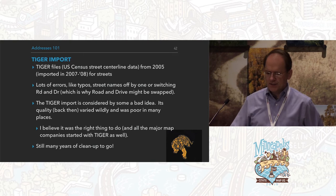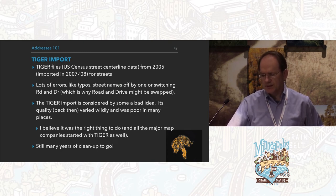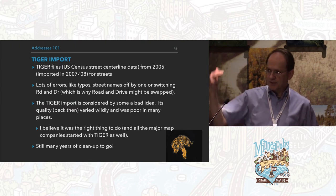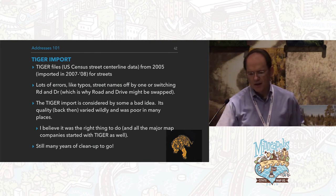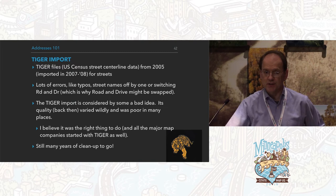Brief segue into Tiger. Tiger was a wonderful thing and people hate it — both are true. There are lots of errors: street names off by a street, missed segments. The Tiger import was considered a very bad idea, but I think it was the right thing to do, because all of the major map companies did exactly this when they started. We still have many years of cleanup to go, but use enough QA tools and you'll find stuff.